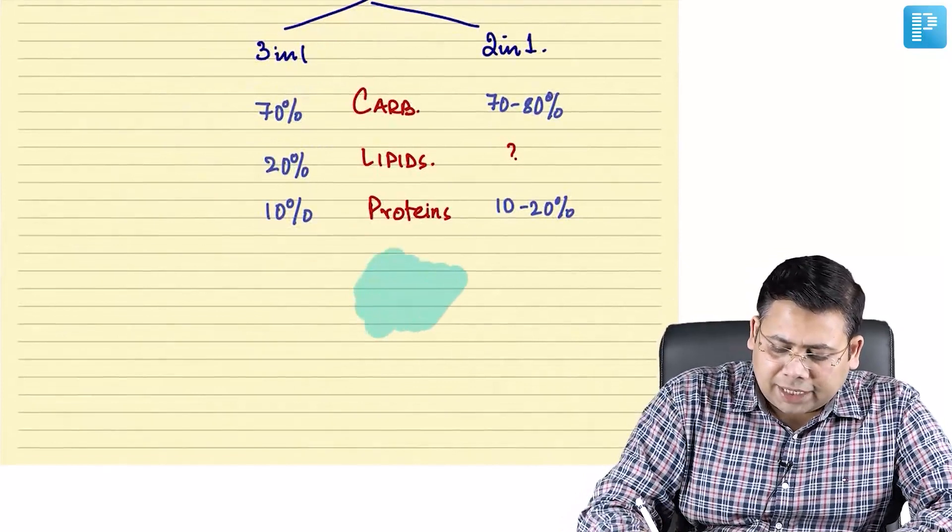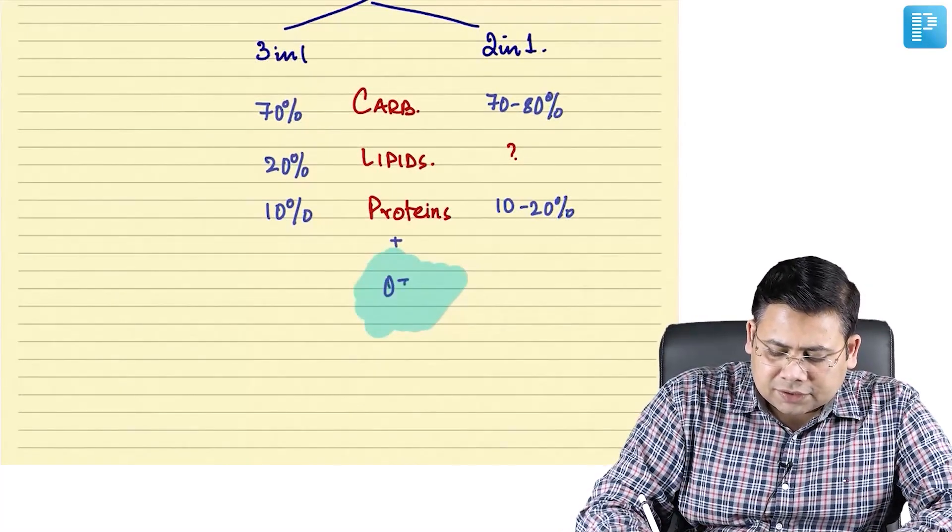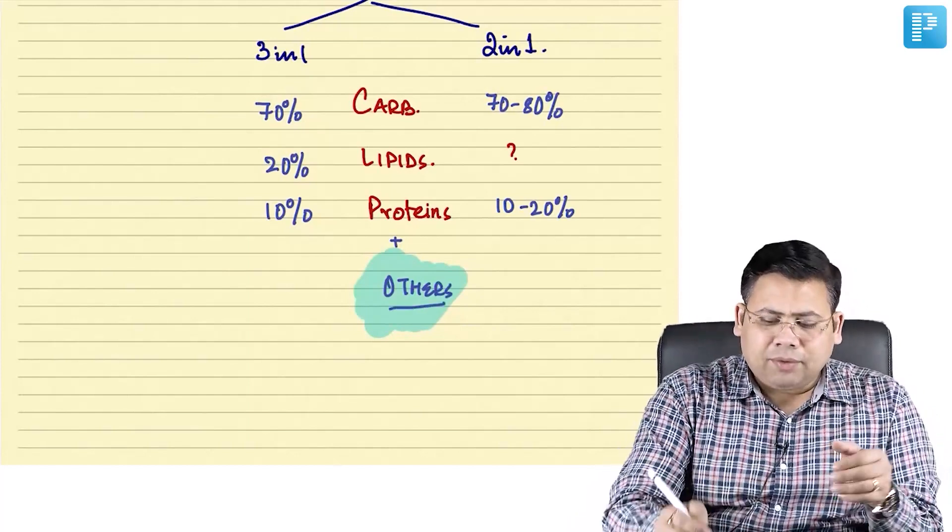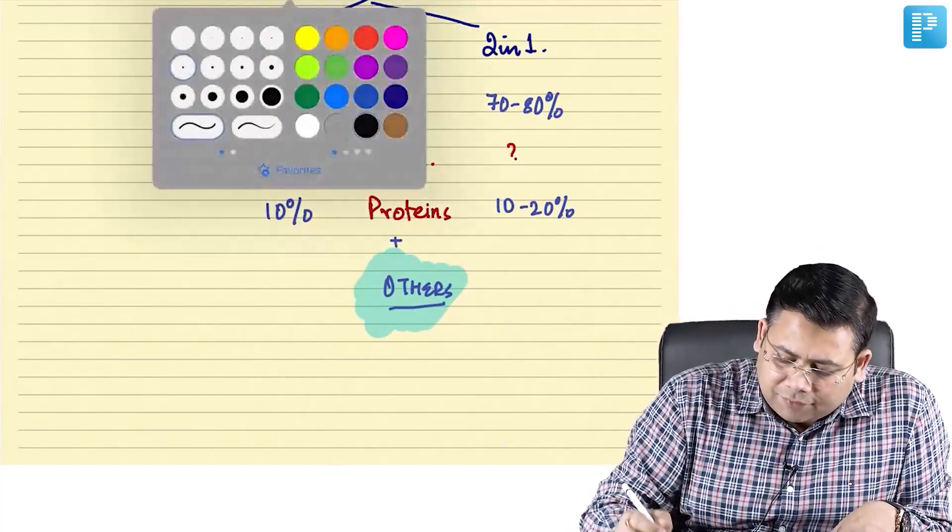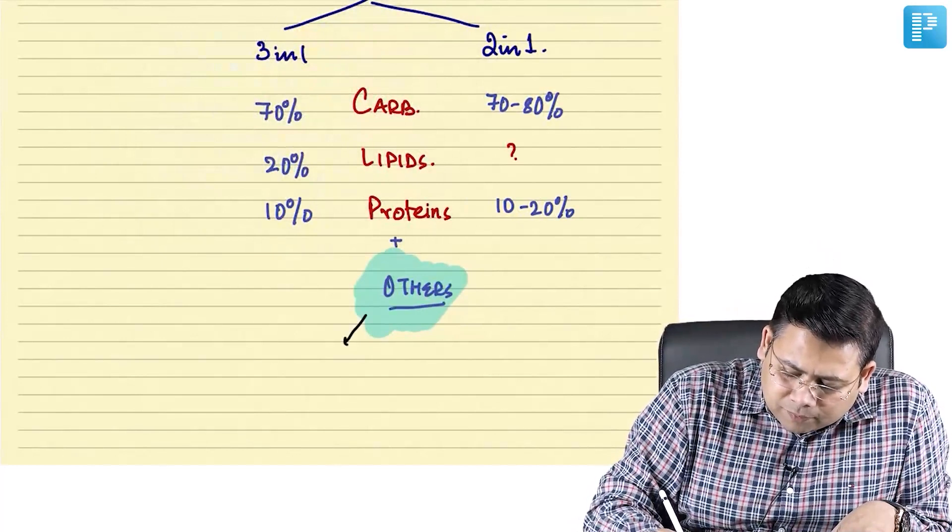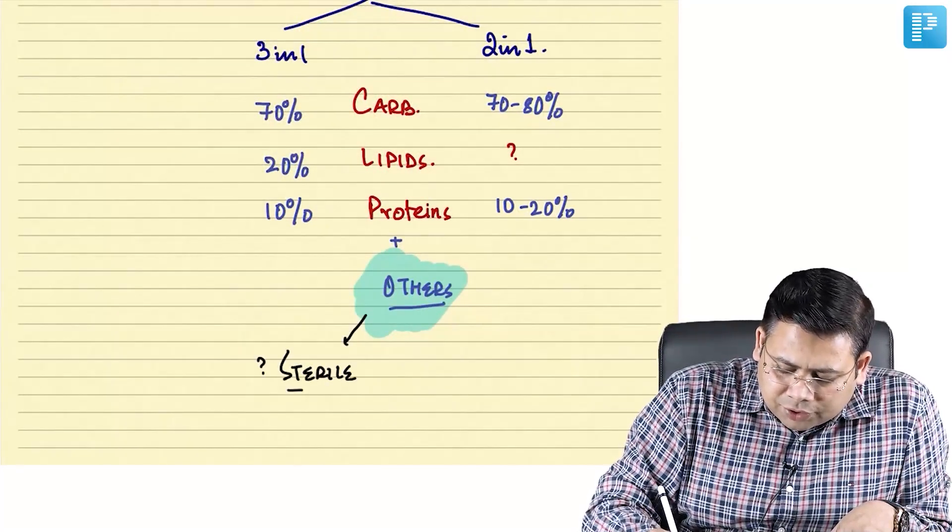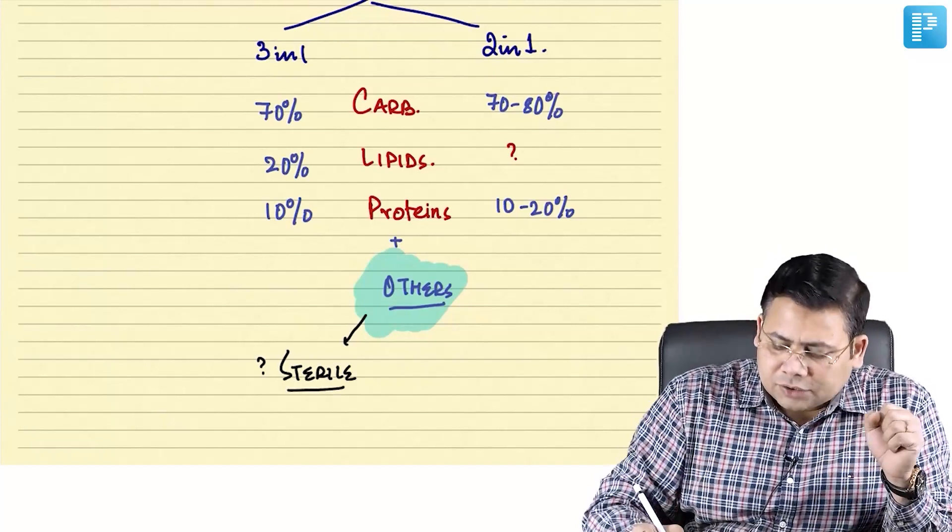Apart from them, there is a category which is others. This is present in both of them, and others include sterile water to dilute the nutrients.